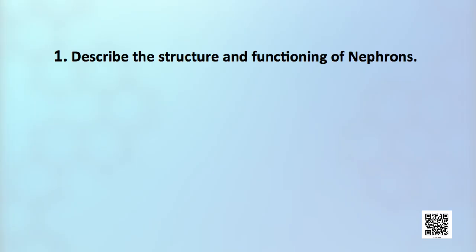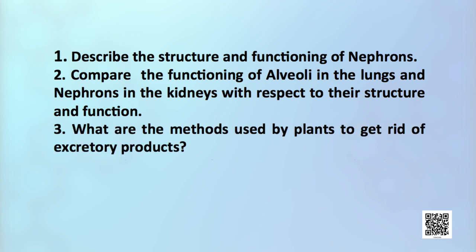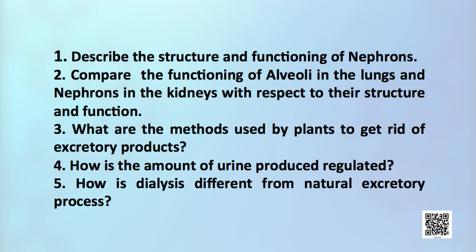Before we conclude the session, here is an assignment. Describe the structure and functioning of nephrons. Compare the functioning of alveoli in the lungs and nephrons in the kidneys with respect to their structure and function. What are the methods used by plants to get rid of excretory products? How is the amount of urine produced regulated? How is dialysis different from the natural excretory process? I hope you enjoyed the session. Thank you very much.